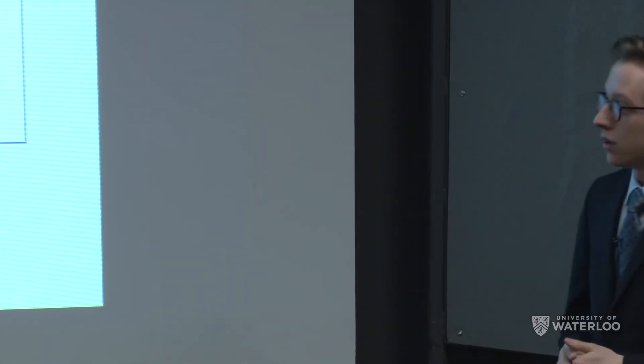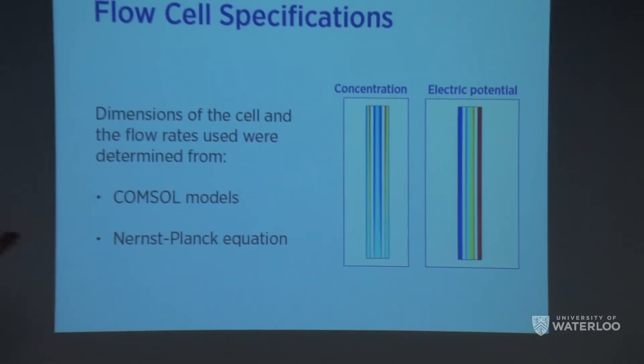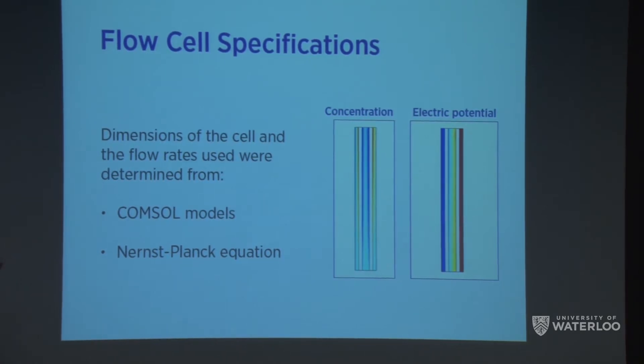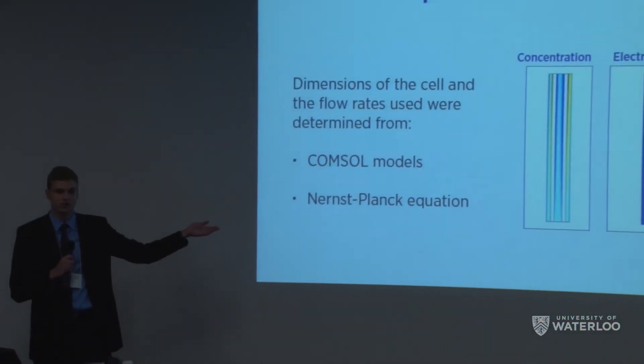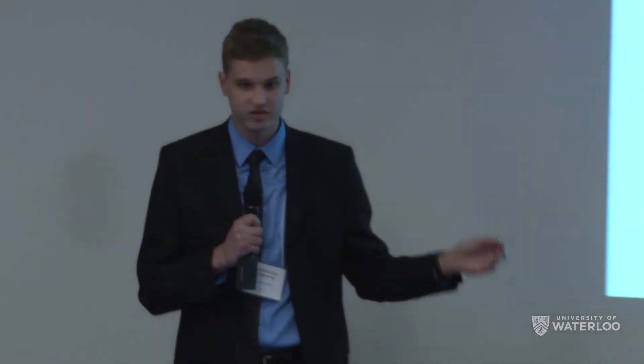Now that we know the materials and design, we need to determine the dimensions. This was a two-fold process: first, we created a COMSOL model of the cell showing concentration and electric potential as the flow progresses through the cell. The chart on the left shows feed water entering with equal concentration, but as it progresses, more and more salt diffuses into the outer electrode channels while decreasing in the center saltwater feed channel. This is the main goal of desalination, made possible by the electric potential shown in the second chart. We entered this information into the Nernst-Planck equation — which determines ion flux based on concentration and potential gradients — to determine an idealized cell size.